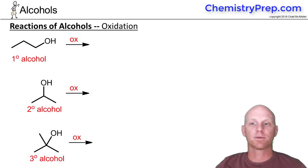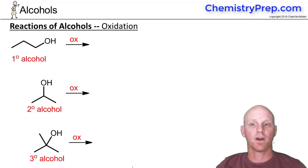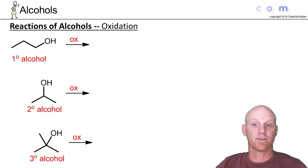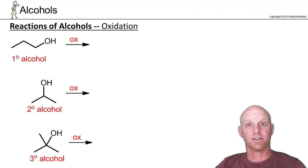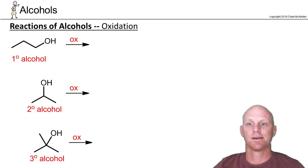Early in the chapter we've already talked about the reduction of ketones and aldehydes to form alcohols. Now we're going to talk about the oxidation of alcohols to form ketones and aldehydes — the exact opposite.